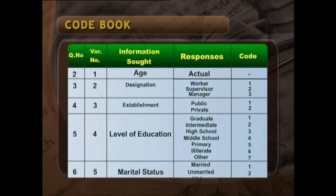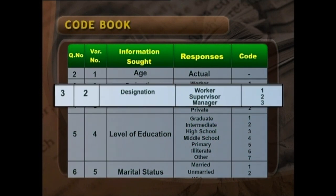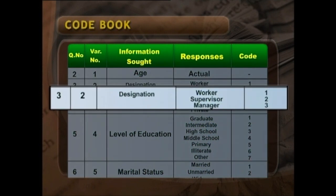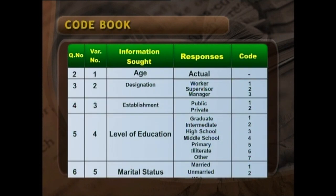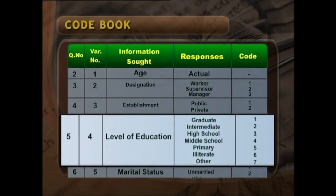Next is designation — it is a categorical variable where we expect three responses: worker, supervisor, manager — coded as 1, 2, 3. Establishment is also a categorical variable. Level of education is a categorical but ordinal variable, where you have to maintain the order. The code should be given in either ascending or descending order. Here it is in descending order: graduate, intermediate, high school, middle school, primary, illiterate. You also have the choice to use ascending order, starting with illiterate, primary, middle, high school, and so on.